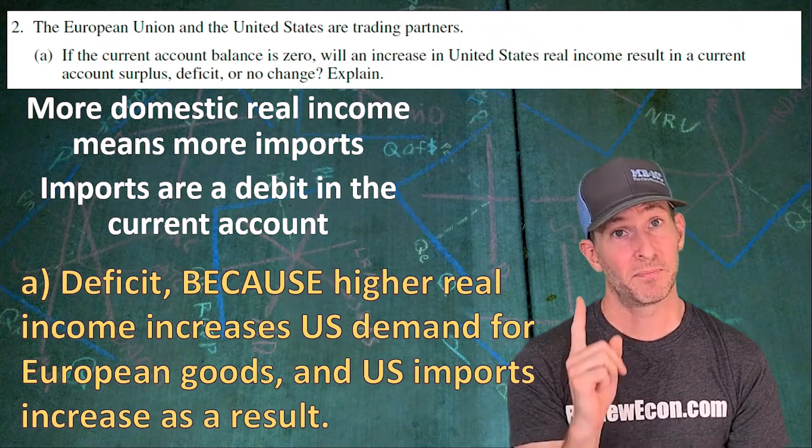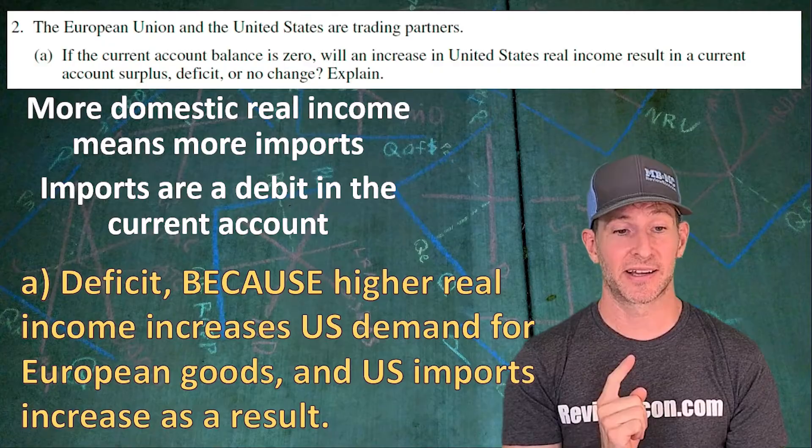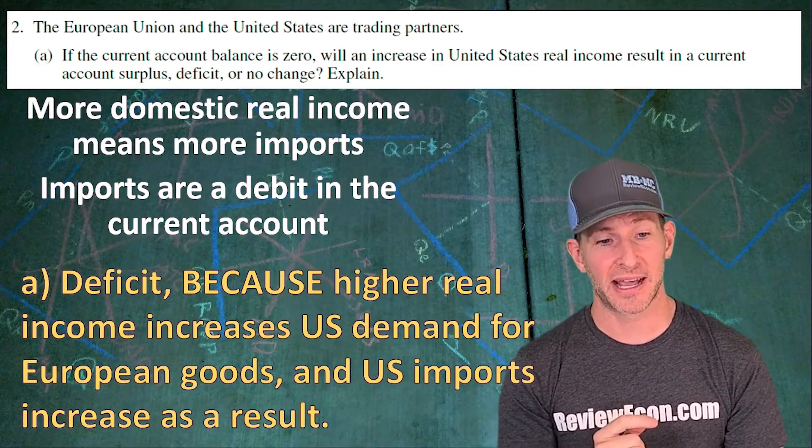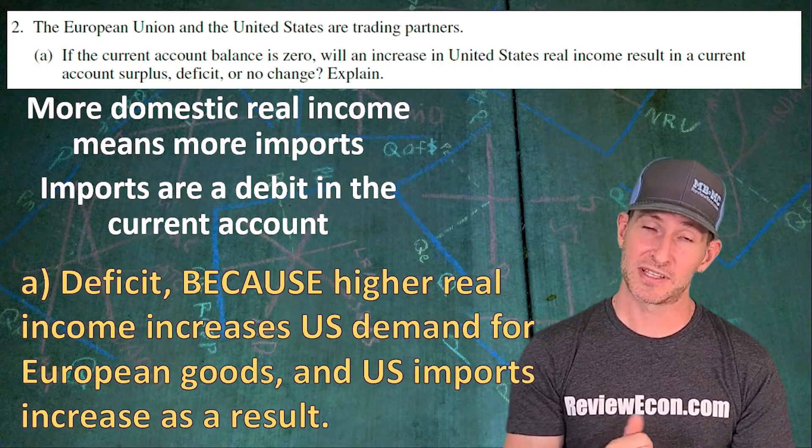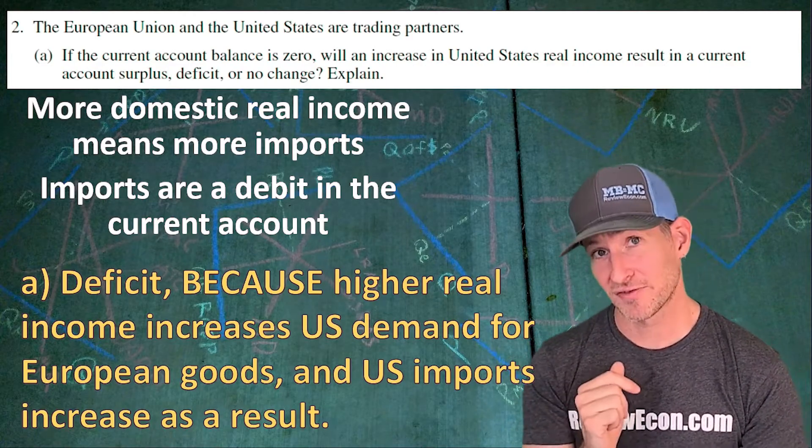Identify it as a deficit because higher real income increases U.S. demand for European goods and U.S. imports increase as a result. Have an explanation that's something like that and you've got yourself a point.